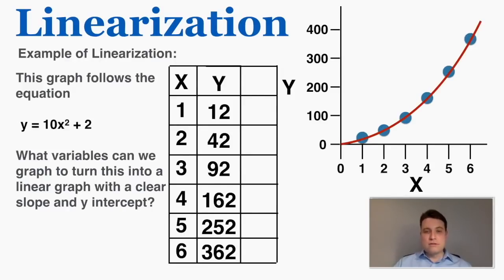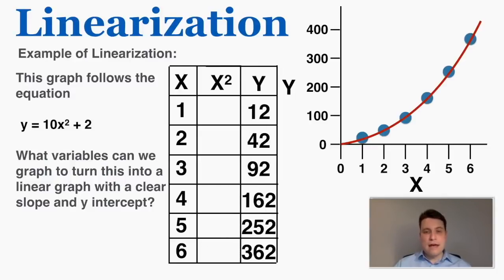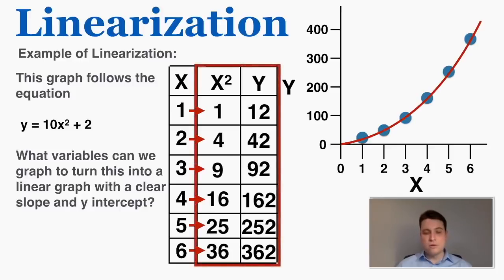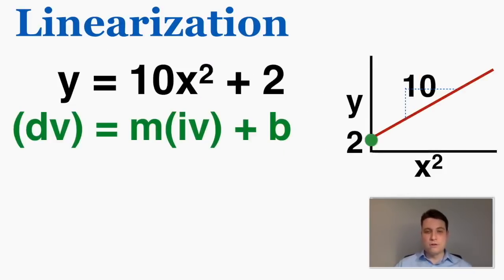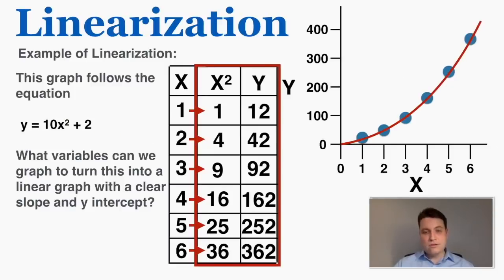What do I mean when I say graph x squared instead of x? For every x that's producing a y, I'm going to square that x and put that on the axis instead. So if I square each x number matched up with a y, this is what I get: 1 squared is 1, 2 squared is 4, and so on. So now I have a column of x squared and a column of y — these are the two things I'm going to graph: x squared on the horizontal axis, y on the vertical axis. My linearization rule is telling me that if I do that, I'll get a linear line with a y-intercept of 2 and a slope of 10. So I'm going to replace all those x numbers with x squared — it's important to understand that I'm still matching these numbers, so 4 is going with 42 rather than 2, 9 is going with 92 rather than 3, and so on.